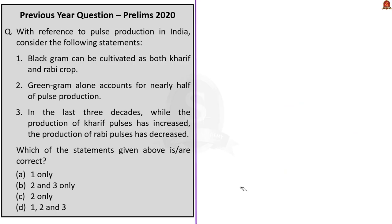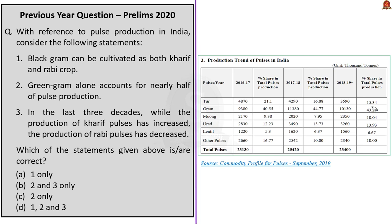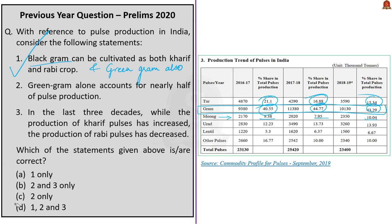Coming to production of major pulses, gram and tur are the main pulses cultivated in India. The percentage share of gram production is between 40 to 45%, and tur's share is between 15 to 21%. Green gram production is 7 to 10%. Now looking at the question: Statement 1 says black gram can be cultivated as both kharif and rabi crop — this is correct. Statement 2 says green gram alone accounts for nearly half of pulse production — this is incorrect because gram accounts for 40 to 45%, not green gram which is only 7 to 10%.